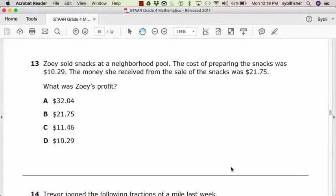Number thirteen. Zoe sold snacks at a neighborhood pool. The cost of preparing the snacks was $10.29. The money she received from the sale of the snacks was $21.75. What was Zoe's profit? A, $32.04. B, $21.75. C, $11.46. Or D, $10.29.